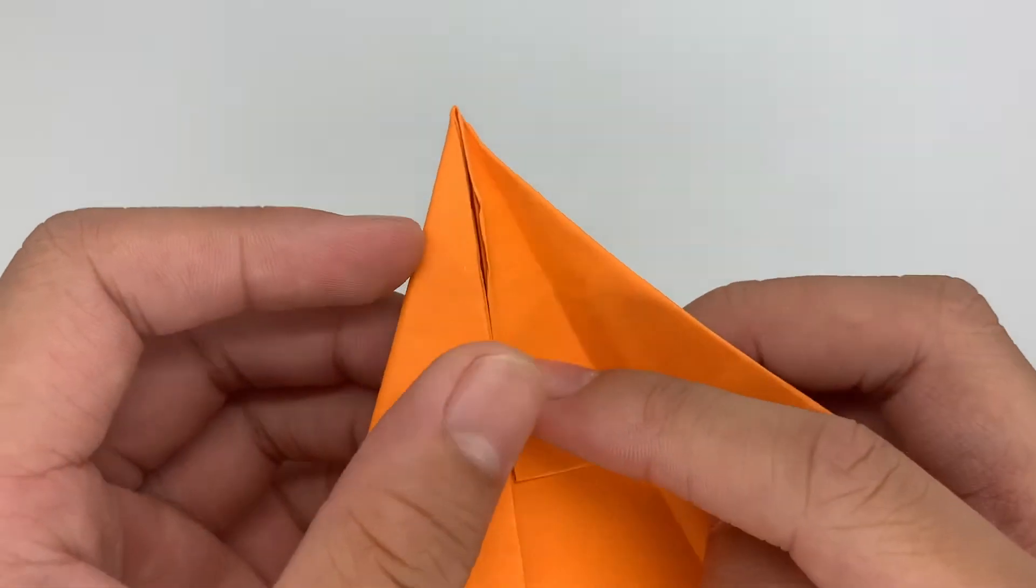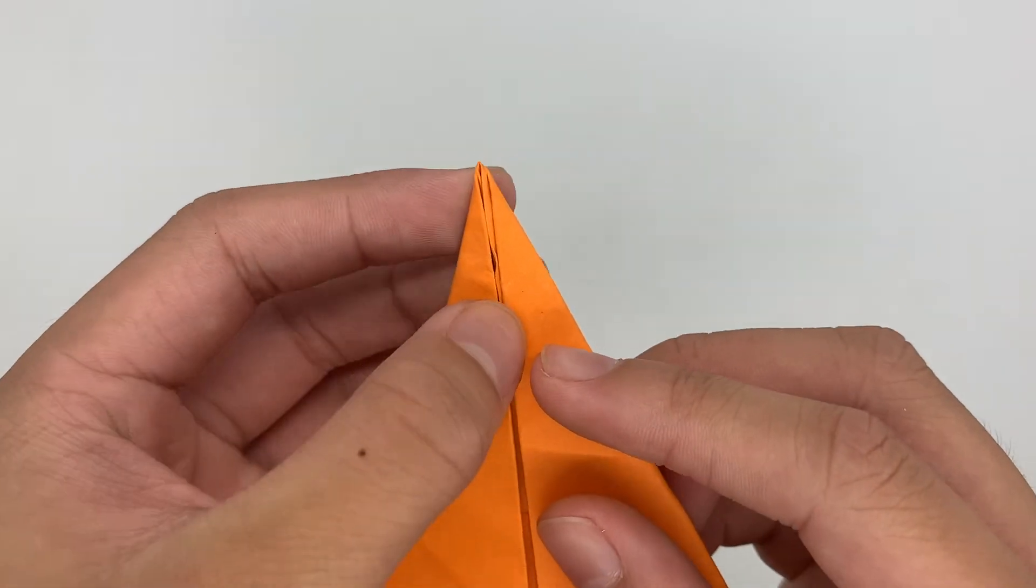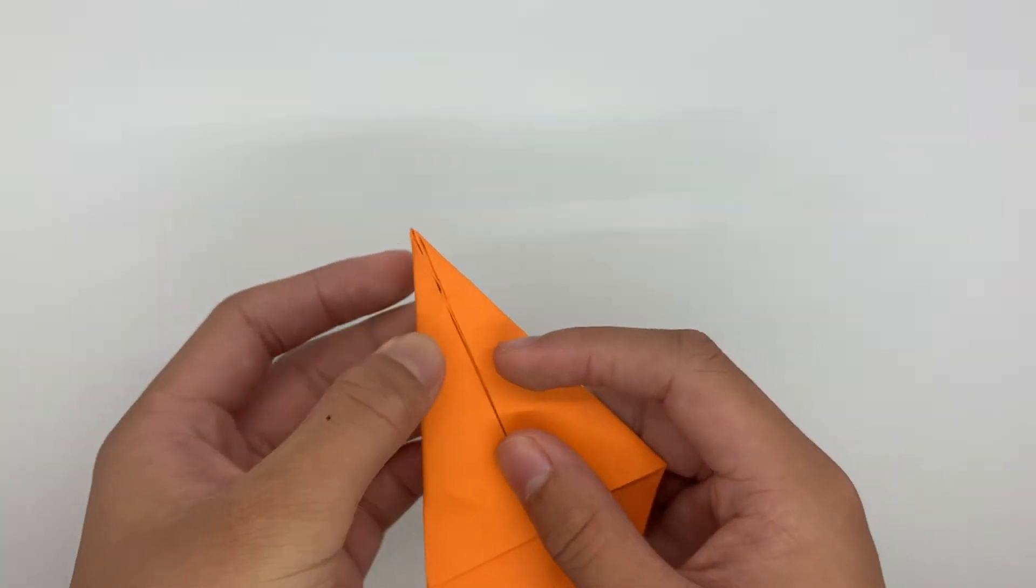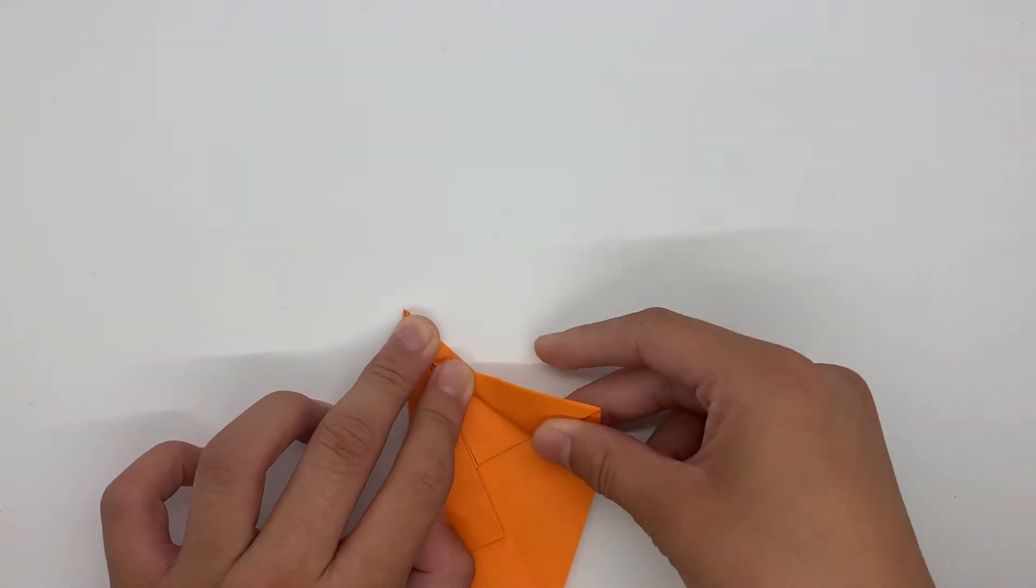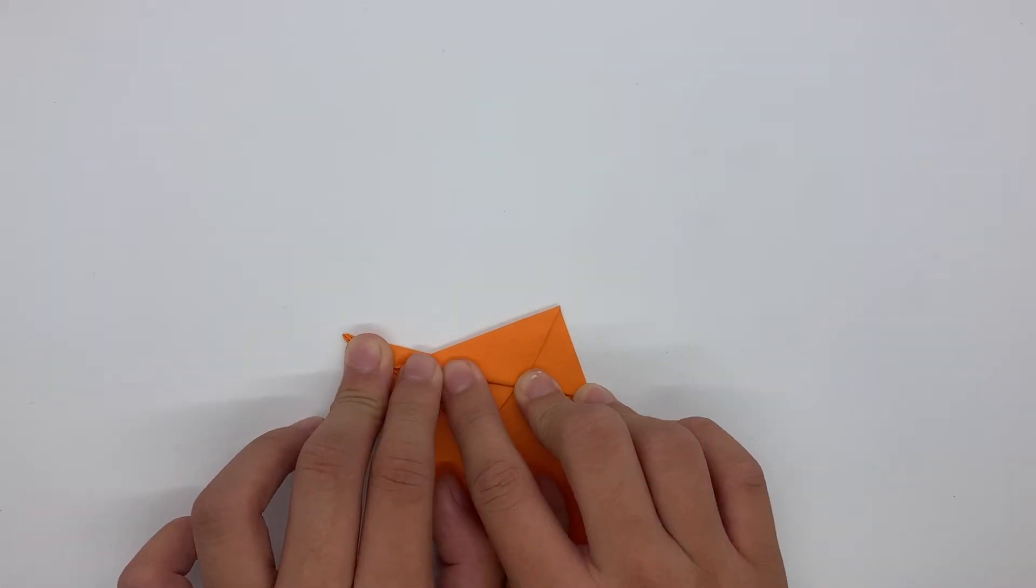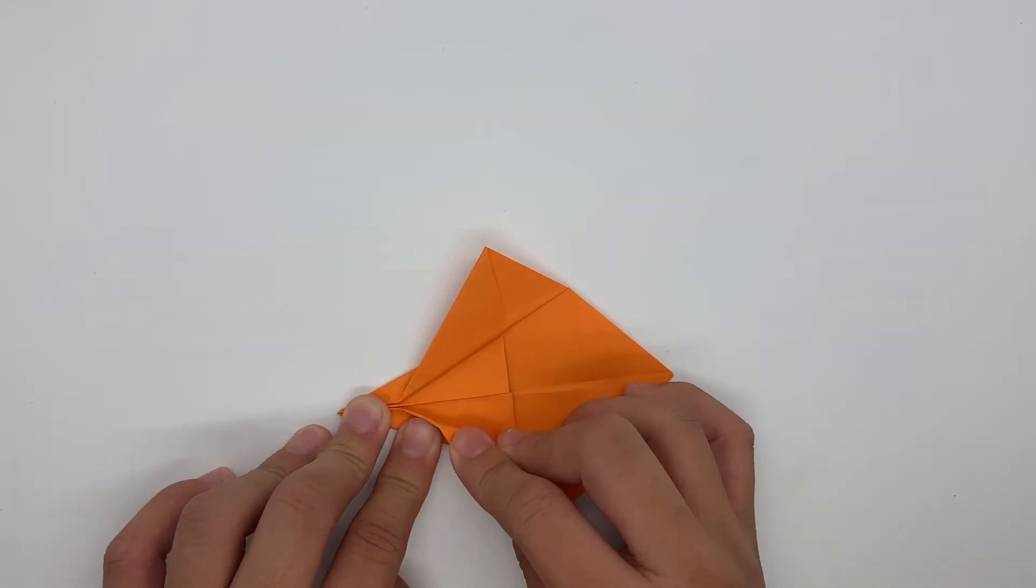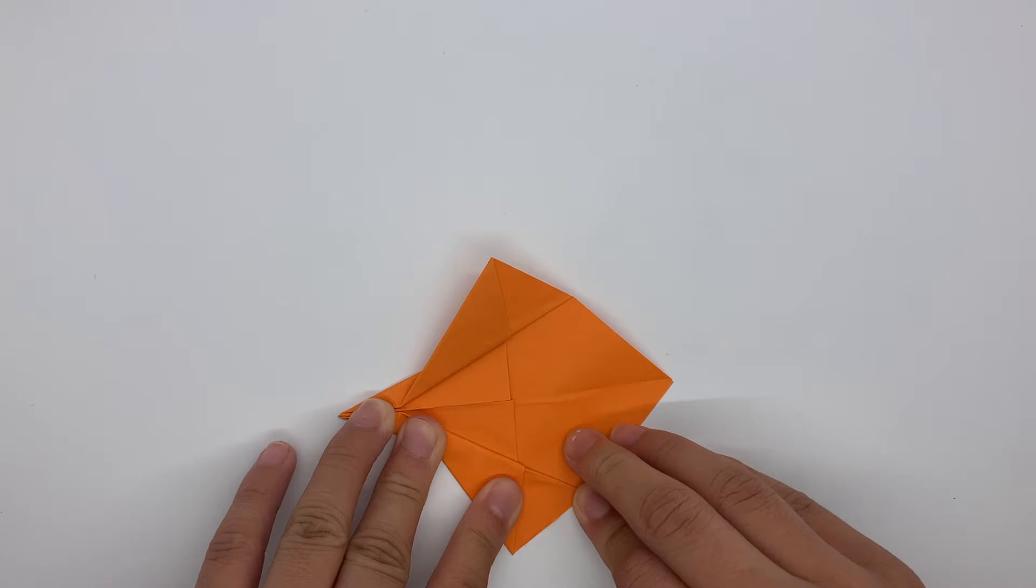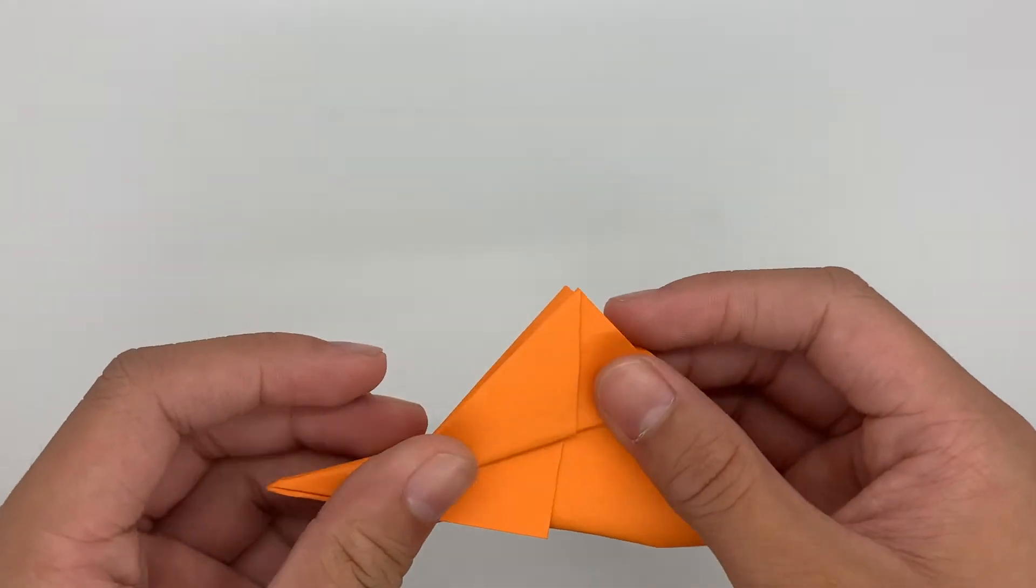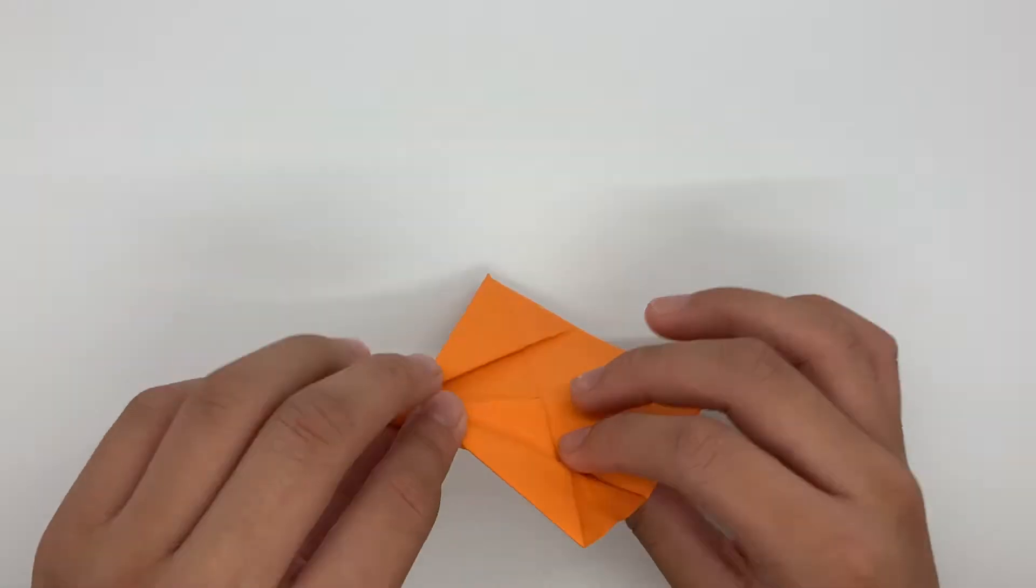And now we're going to begin folding wings. So as you can see, maybe you can't see it, but there should be a reference point right there. And we're going to fold from the reference point to here to make the wings. We're going to do that. And then we're going to make sure that's the same on this side, or else your plane is going to go spinning. So you're going to fold in half here to make sure it's like that.